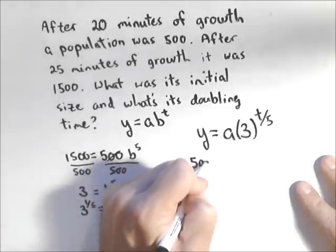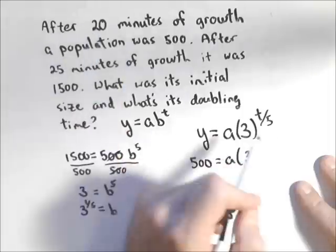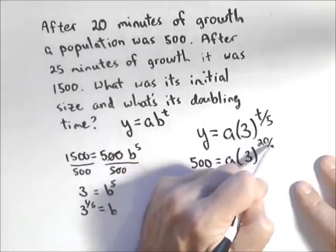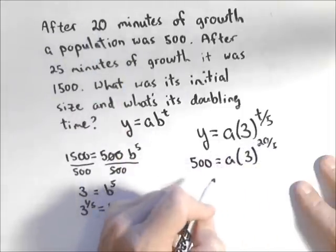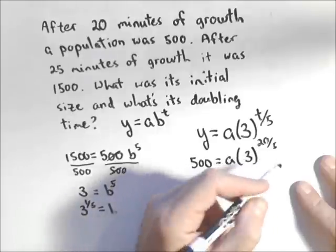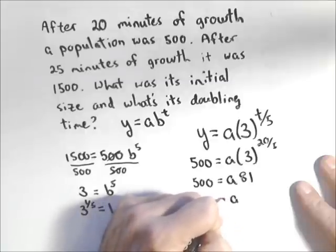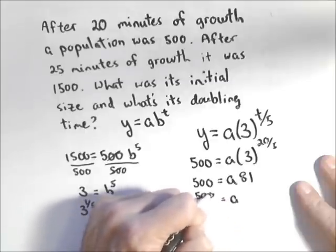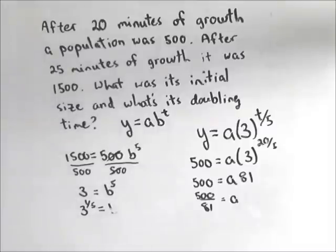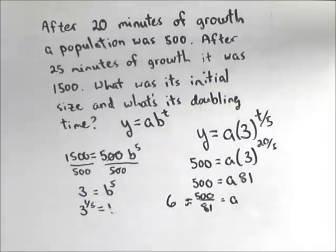I'm going to use the first piece. I know that the population is 500 when t is 20, so it's 20 over five. I get 500 equals a times three to the fourth, which is 81. A is approximately 500 over 81, which is about, we'll round this off since we're talking about bacteria, right around six bacteria is our initial amount.